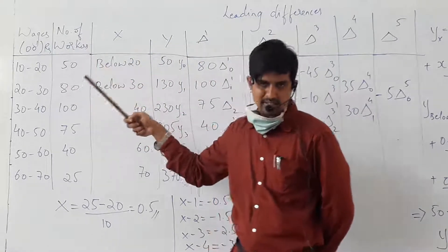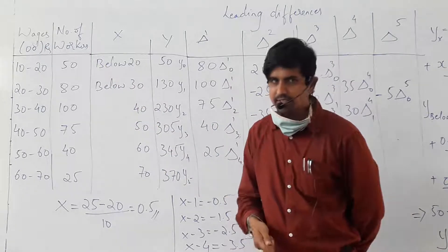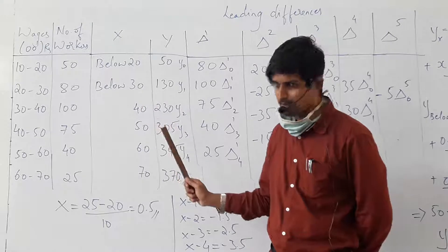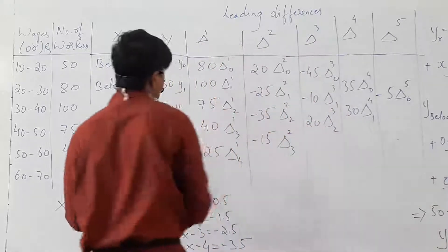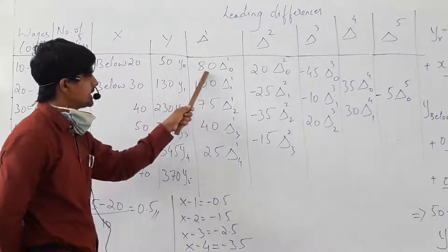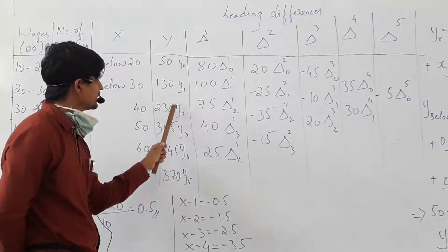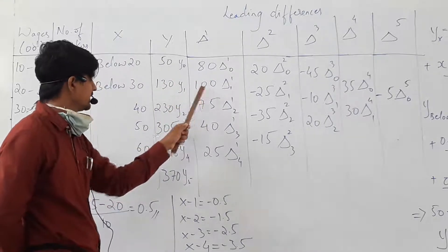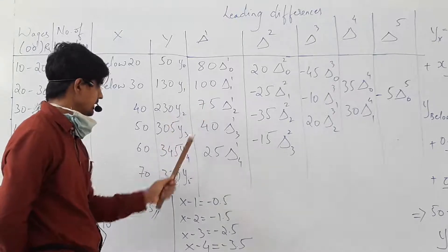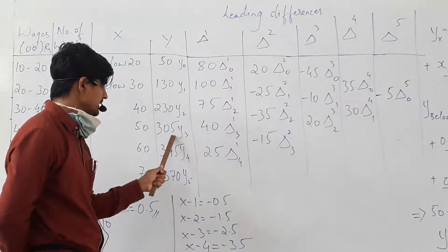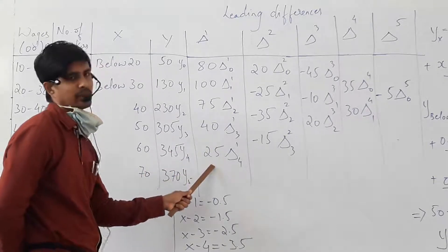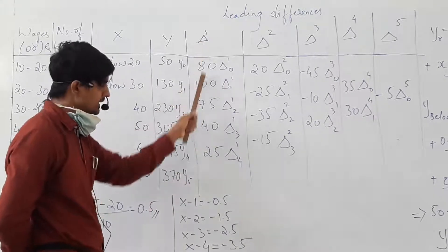Because they asked the question below 25, we have to use the cumulative frequency table. Next, first leading differences: 130 minus 50 = 80. 230 minus 130 = 100. 305 minus 230 = 75. 345 minus 305 = 40. 370 minus 345 = 25. So this is my first leading difference.